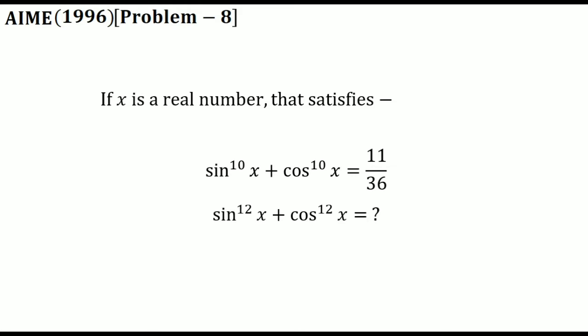Sin to the power 12x plus cos to the power 12x is in the form m by n, where m and n are co-prime numbers. So we have to find the value of m plus n — basically find the value of sin to the power 12x plus cos to the power 12x, then add the numerator and denominator. Please give your trial to this problem and keep watching for the solution.